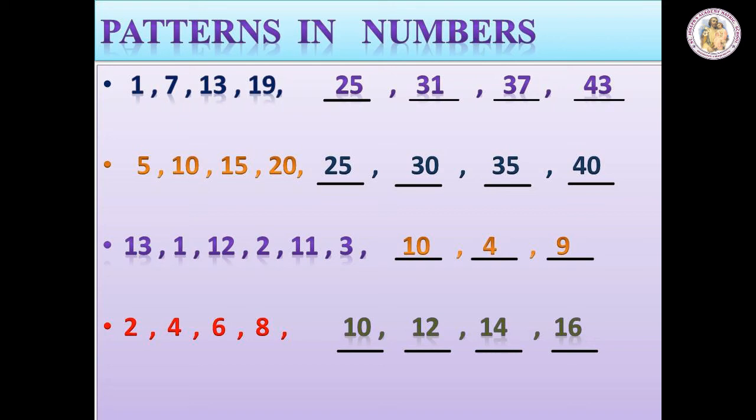Because, the difference between the first number and the second number, that is, one and seven, is six. So, one plus six is seven. Seven plus six is thirteen. Thirteen plus six is nineteen. Nineteen plus six is twenty-five.